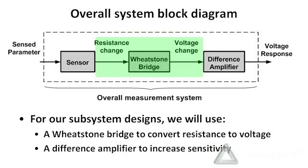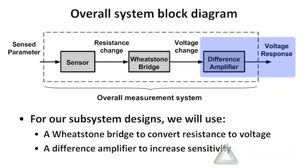For example, for a strain measurement you want the output voltage to change as a result of deflecting something — bending the strain gauge. It's very common for the sensor's output resistance to also change due to temperature changes, which you don't want. There are Wheatstone bridge configurations that reject temperature changes so it only responds to deflection. The output voltage from the Wheatstone bridge is typically fairly small, so we'll use a difference amplifier to convert that small voltage variation into a higher voltage at the output.